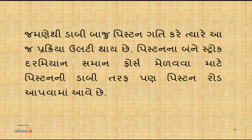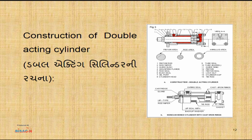હવે જ્યારે જમણેથી ડાબી બાજુ પિસ્ટન ગતિ કરે ત્યારે આ પ્રક્રિયા ઉલટી થાય છે. બંને સ્ટ્રોક દરમ્યાન સમાન ફોર્સ મેળવવા માટે પિસ્ટનની ડાબી તરફ પણ પિસ્ટન રોડ આપવામાં આવે છે - આ ડબલ એક્ટિંગ સિલિન્ડર છે.